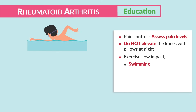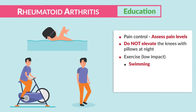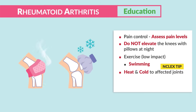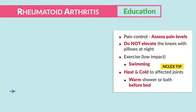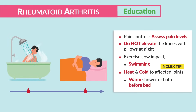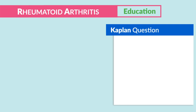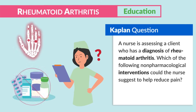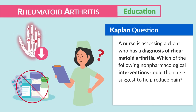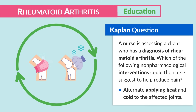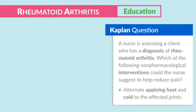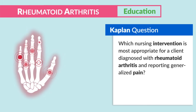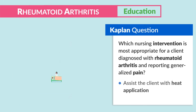For exercise, use low-impact activity to improve joint function, muscle strength, and range of motion — we recommend swimming, a stationary bike, or light walking. Big NCLEX tip: apply heat and cold to the affected joints, but alternate them. Key terms: a warm shower or bath before bed. Kaplan question: non-pharmacological interventions for pain — alternate applying heat and cold; also assist the client with heat application and range of motion exercises.